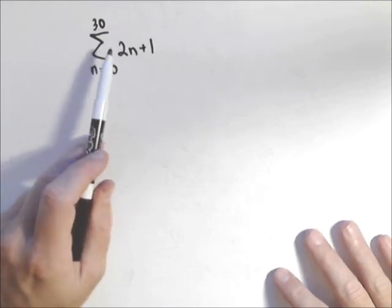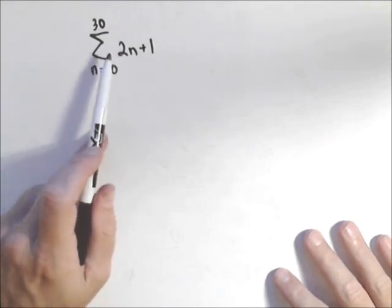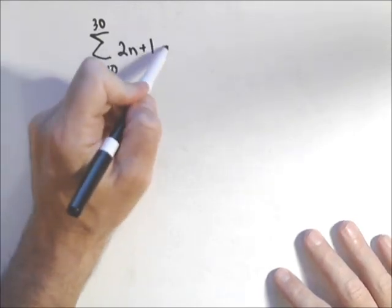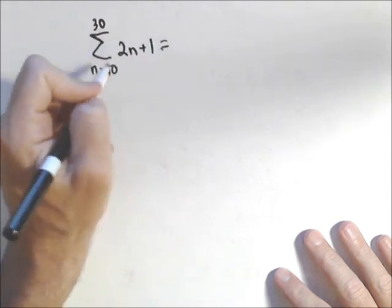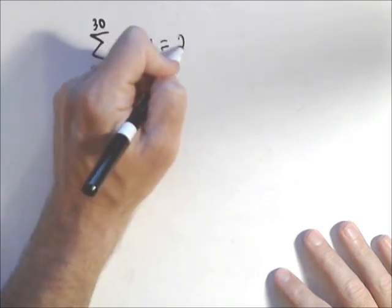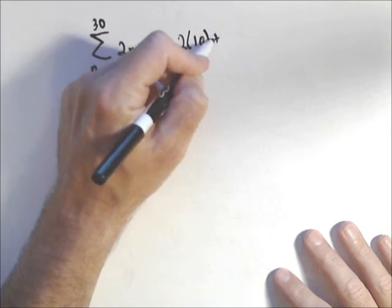When we have summation notation, we're summing up a bunch of numbers. For instance, if we wanted to work this out, we'd plug 10 in to get our first one, so 2 times 10 plus 1 is our first term.